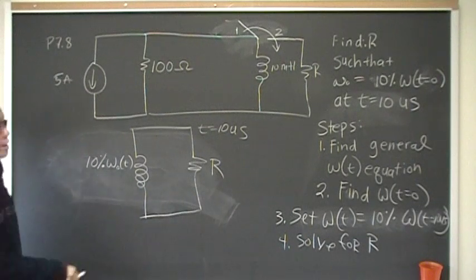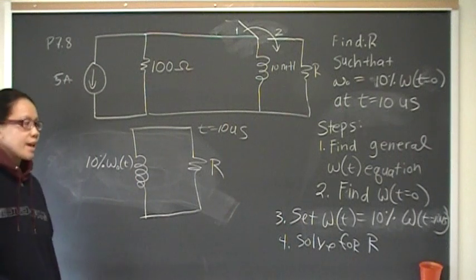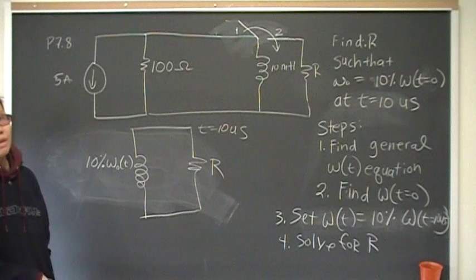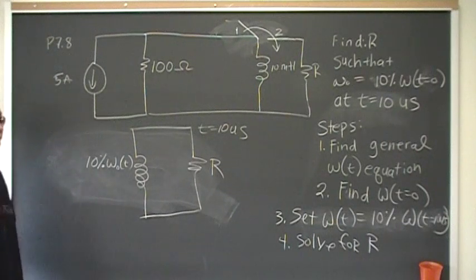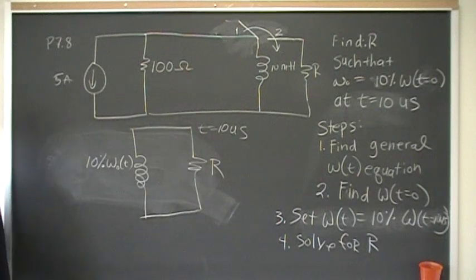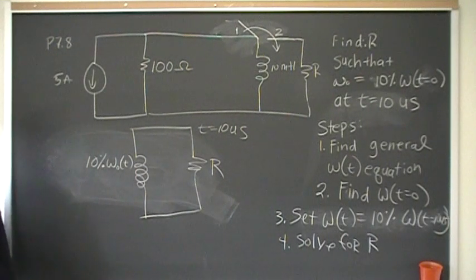And there's a specific value of resistance that will do that. What is it? Is it 10, 20, 30, 40, 50, 60 ohms? We don't know. That's our job as engineers to find that and design that. So that's the problem, 10% at when time is 10 microseconds after the switch closes and disconnects from the independent current source.